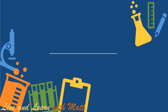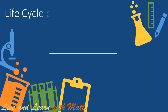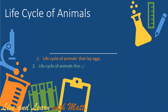Hello and welcome back to science class. Today we're going to look at the life circle of animals. We're going to take a look at three aspects: number one, the life circle of animals that lay eggs; number two, the life circle of animals that give live birth; number three, guidelines to protect the life circle of animals.